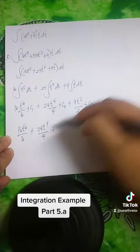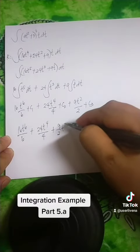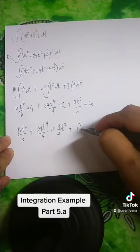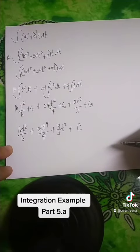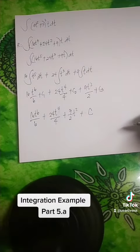Plus 9 over 2t squared plus the c, where c is equal to c sub 1 plus c sub 2 plus c sub 3.